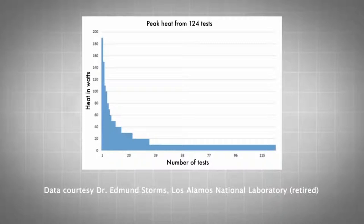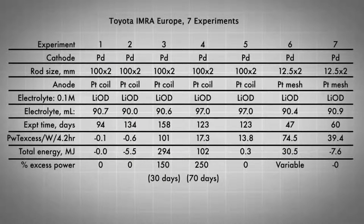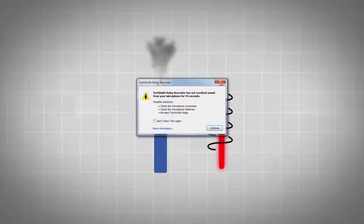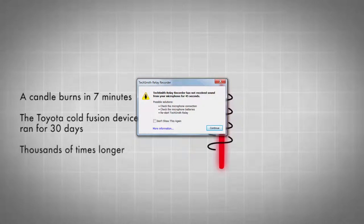Most cold fusion reactors produce low heat, less than a watt, but a few have been much hotter. Here are 124 tests from various laboratories, grouped from high power to low. Only a few produced high power. Most produce less than 20 watts. In 1996, at Toyota's IMRA Research Lab in Europe, a series of reactors produced 30 to 100 watts, which was easy to detect. They continued to produce heat for weeks, far longer than any chemical device could. The core of the Toyota reactor was about the size of a birthday cake candle. A candle burning at 100 watts uses up all of the fuel in 7 minutes, whereas one of the Toyota devices ran at 100 watts continuously for 30 days. That's thousands of times longer than the candle. It produced thousands of times more energy than the best chemical fuel.